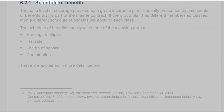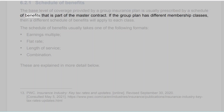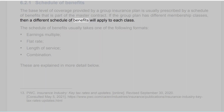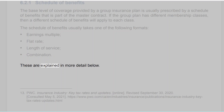6.2.1 Schedule of Benefits. The base level of coverage provided by a group insurance plan is usually prescribed by a schedule of benefits that is part of the master contract. If the group plan has different membership classes, then a different schedule of benefits will apply to each class. The schedule of benefits usually takes one of the following formats: Earnings Multiple, Flat Rate, Length of Service, or Combination.